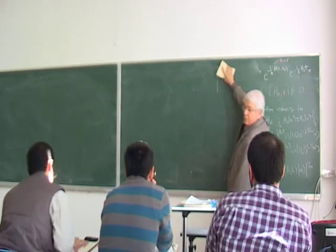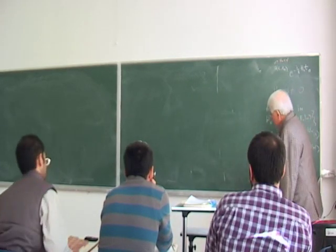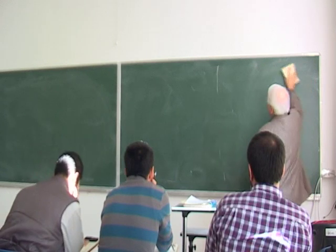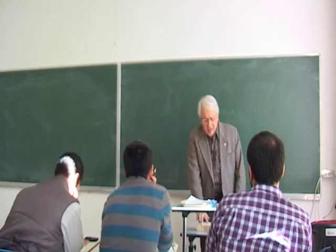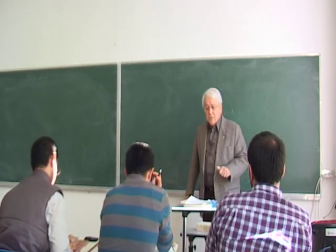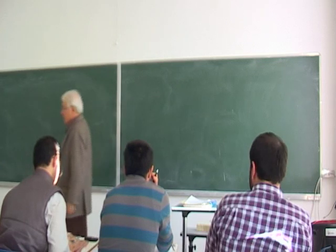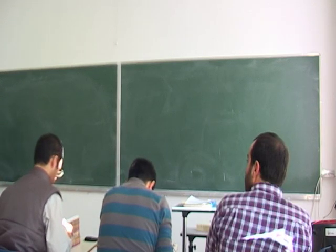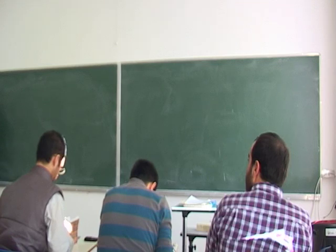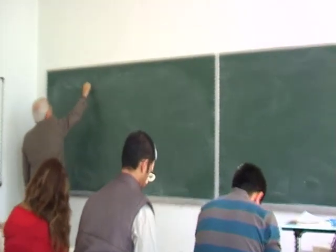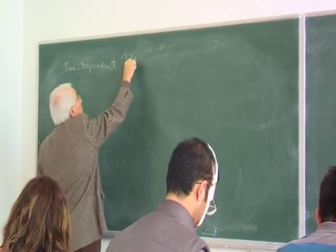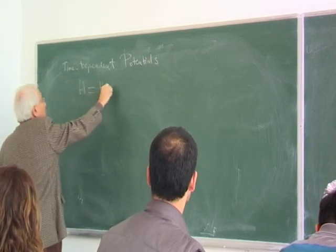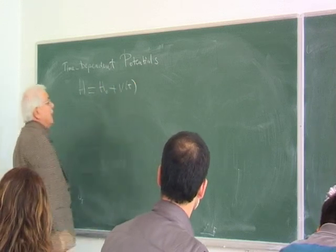Eventually we will go to perturbation theory, because rigorously, most often than not, we cannot solve these problems exactly, so we have to develop perturbation theories. We are going to base our discussion on the interaction picture description. For that reason, I will write the full Hamiltonian in the form of H0 plus V(t).